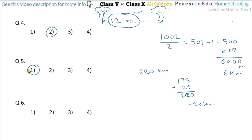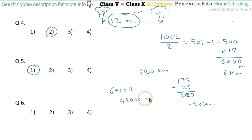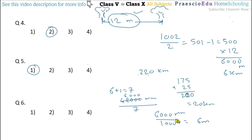Question number 6: A 42,000 millimeter long wire is cut equally at 6 places. Find the length of each piece. Cutting at 6 places gives 6 plus 1 equals 7 pieces. So 42,000 divided by 7 equals 6,000 millimeter. Since options are in meters and 1000 mm equals 1 meter, dividing by 1000 gives 6 meter. This is given in option number 4.